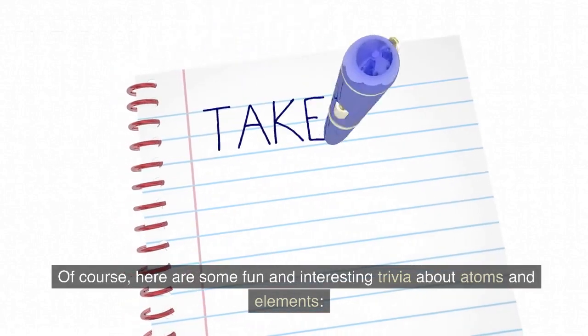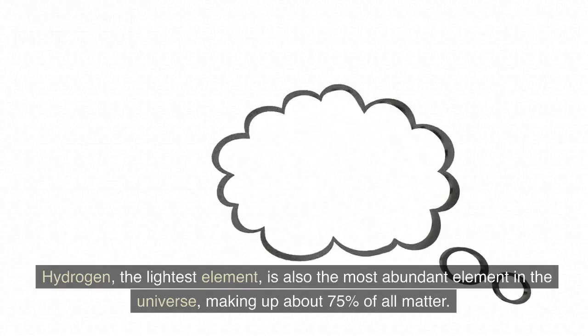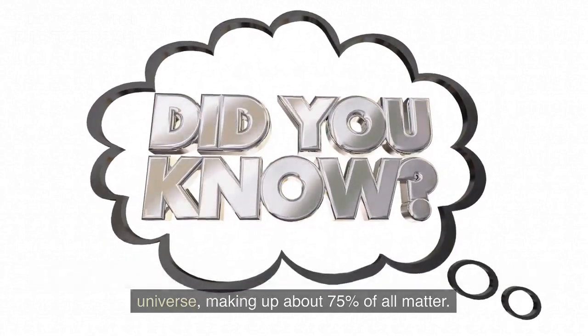Of course, here are some fun and interesting trivia about atoms and elements. Hydrogen, the lightest element, is also the most abundant element in the universe, making up about 75% of all matter.